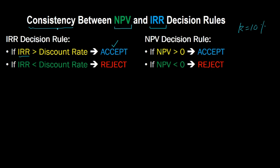When we say that NPV and IRR are consistent with each other, what we are really saying is that if you find that the net present value of a project is greater than zero, that is the same thing as saying that the internal rate of return of that project is greater than the discount rate. In other words, you would end up accepting the project using the NPV rule and also using the IRR rule. Saying IRR is greater than K is the same thing as saying NPV is greater than zero — that is the sense in which NPV and IRR are consistent.